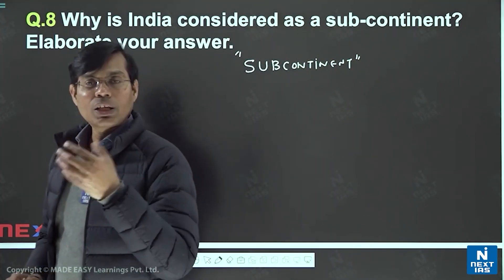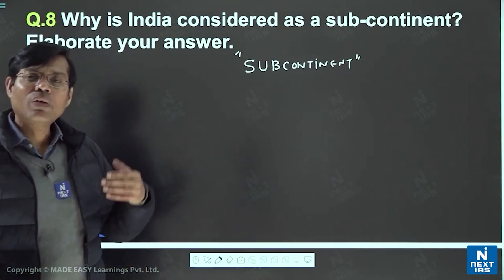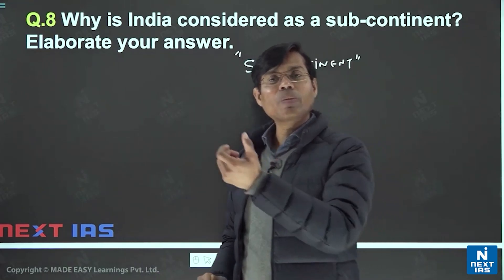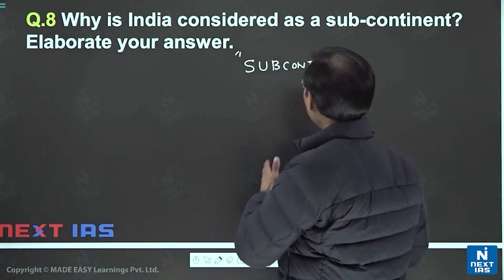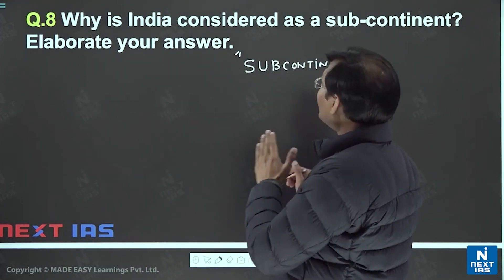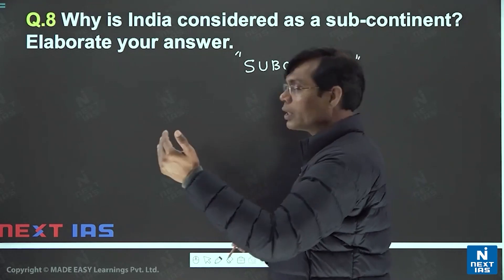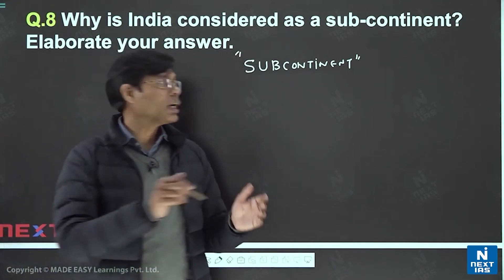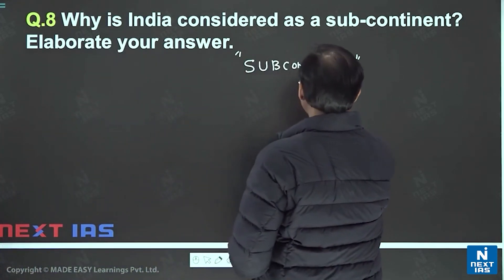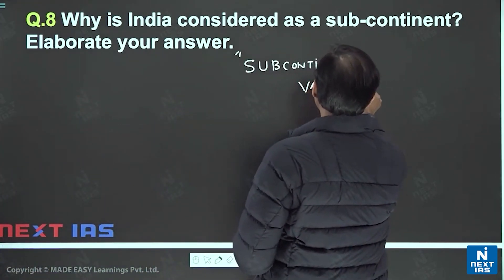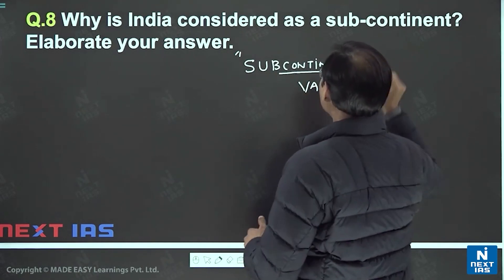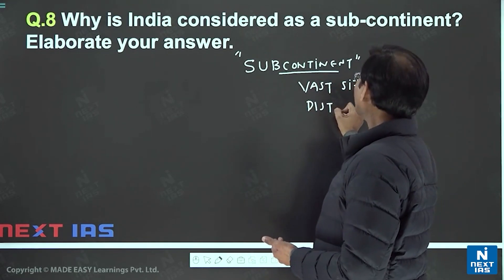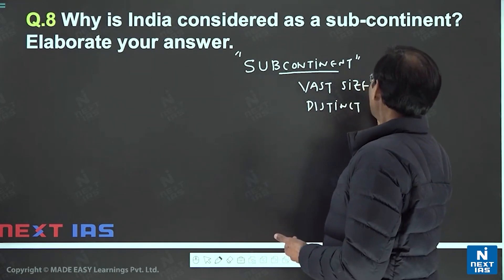This region is very distinct in its nature — very well demarcated — and scholars were compelled to use the term 'Indian subcontinent.' To call an area a subcontinent, some criteria must be met. Initially, a subcontinent must have a vast size, as defined by several scholars. It should be vast in size with distinct boundaries.